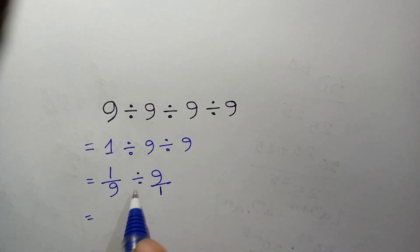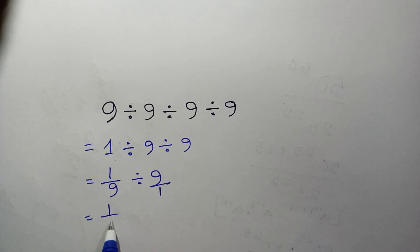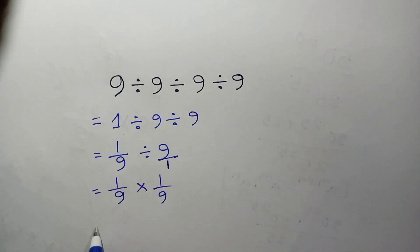Now we remove this division and we take multiplication. So 1 over 9 multiply. When we take multiply, then the denominator will be numerator and numerator will be denominator. So it will be 1 over 9. So our final answer is 1 times 1 which is 1, and 9 times 9 which is 81.